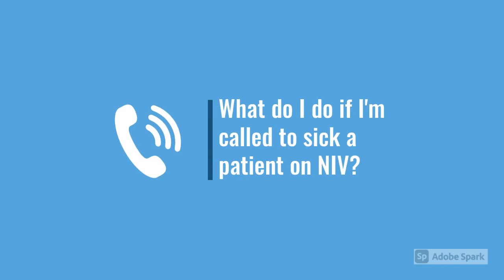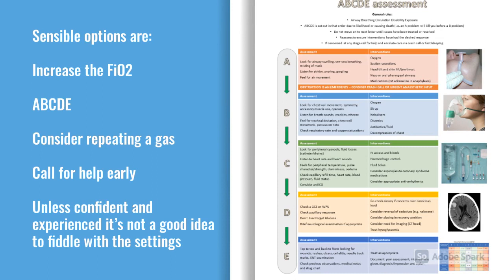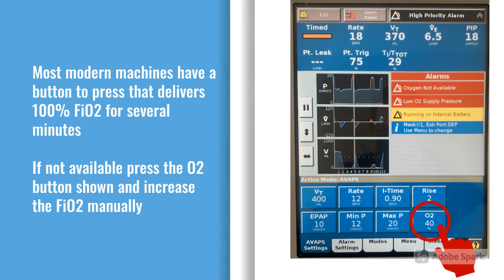If you're called to see a sick patient on ventilatory support, it's always a good idea to increase your inspired oxygen and then call for help. Unless you're confident and experienced, it's quite a complex system to adjust. As a junior doctor, don't fiddle with the machines — increase the FiO2, do an ABCDE, and call for help. Many newer machines have a 100% button that delivers 100% FiO2 for one to two minutes only, so it won't indefinitely give high-flow oxygen and cause issues for CO2 retainers.